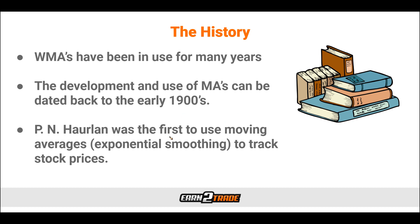A man by the name of P.N. Harlan was the first to use moving averages to track stock prices, and they considered this exponential smoothing. At the time, he referred to them as trend values and measured data in trend direction by smoothing their constants. Later, it became known as the exponentially weighted moving average. What we call the 19-period exponential moving average today is what he called the 10% trend back then. Over the years, moving averages have evolved and are used across many different financial markets and are part of a variety of different trading strategies.